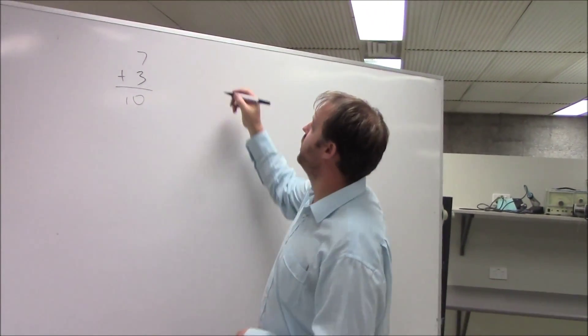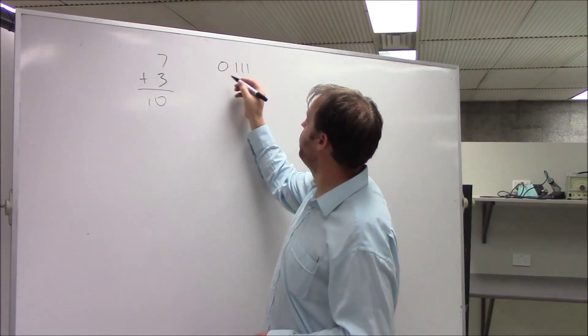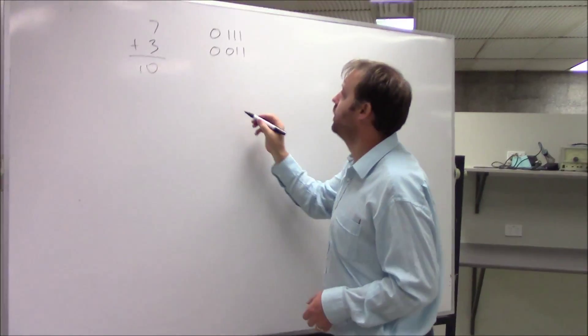It's no different with binary. So 7 is 0, 1, 1, 1. 3 is 0, 0, 1, 1.